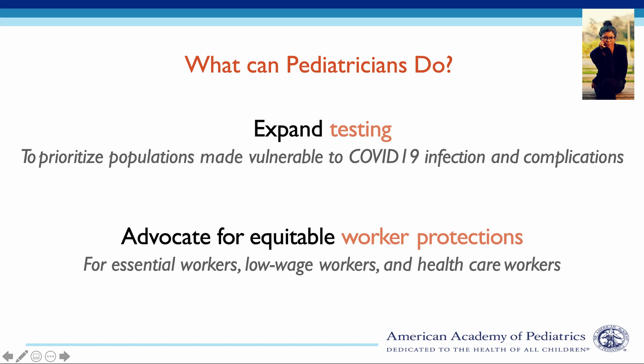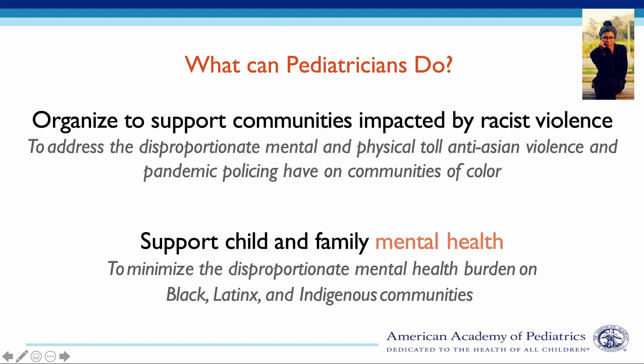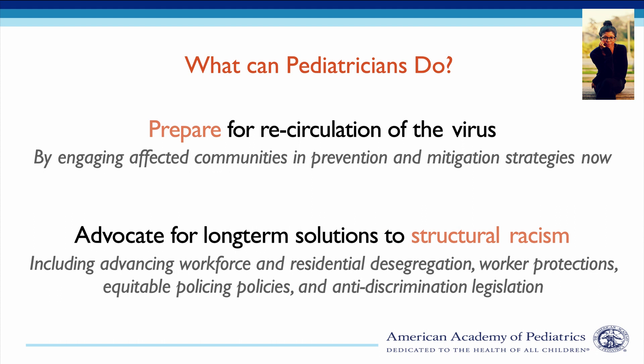Number six: the sacrifice essential workers are making requires an equal sacrifice on our part to protect them with living wages, paid sick leave, and protective equipment. Number seven: ensuring affordable housing safe from pollution will be critical to mitigating future health problems. Number eight: championing anti-racism is critical to support Asian communities affected by racist violence. Number nine: the mental health toll from COVID-19 will be unique and profound for children broadly, and for African American, Latinx, Indigenous, and Native Hawaiian Pacific Islander populations in particular. Number ten: as we prepare for potential recirculation of the virus, we must address the root drivers of racial health inequities now.